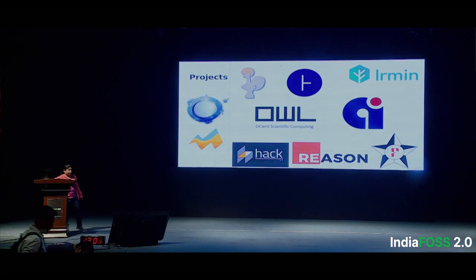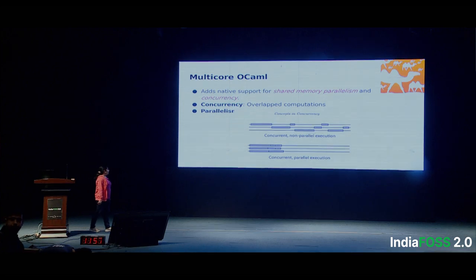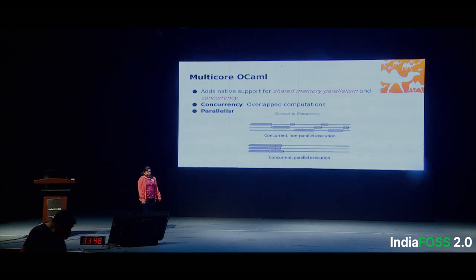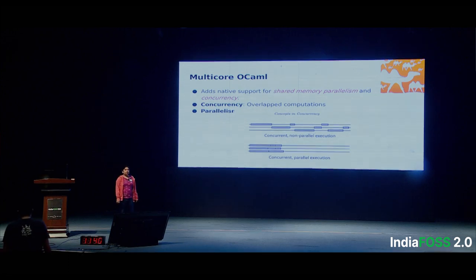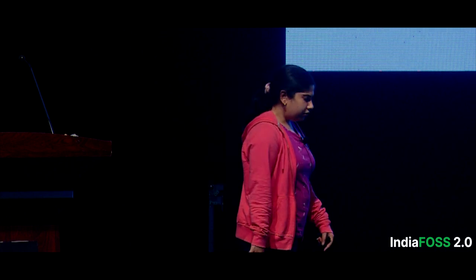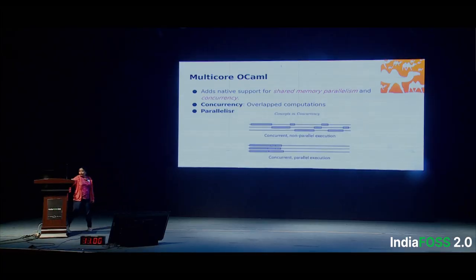There are more projects written in OCaml — we do use it in real life. Now I'm going to talk about the software I work on, which is an extension of OCaml called Multicore OCaml. One pain point with OCaml was that it did not support running programs in parallel. Multicore OCaml tries to solve that problem by introducing concurrency and parallelism — specifically, it adds shared memory parallelism and support for concurrency. Concurrency is the ability to run overlapping computations, while parallelism is the ability to run multiple processes simultaneously on different CPUs.